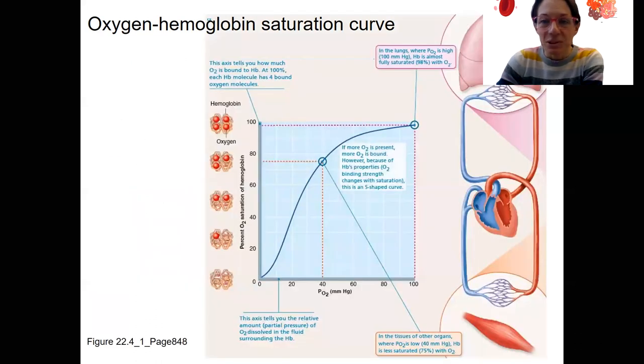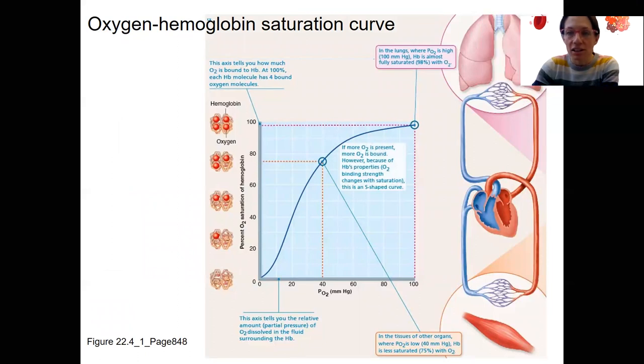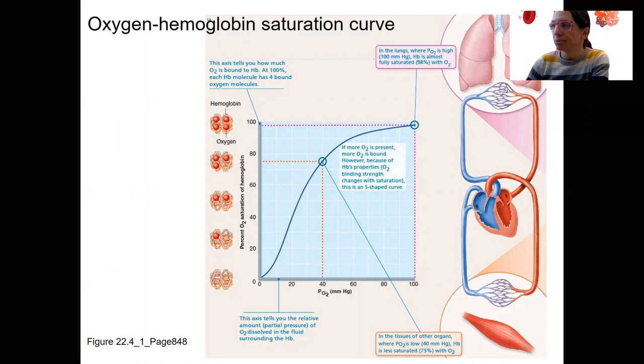All right, so this is the same figure I showed, but we've got some extra detail here. It's probably a little neater. So this is at the lungs, right? This would also be entering systemic. We've got a high partial pressure of oxygen and almost fully saturated hemoglobin.